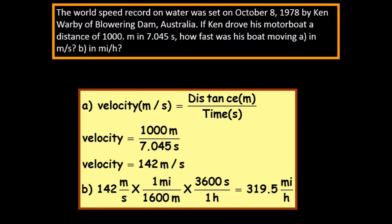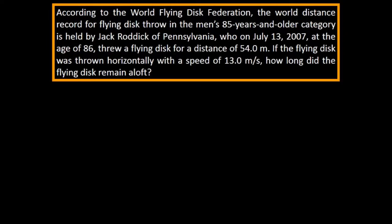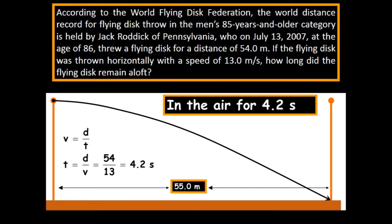The next problem will be something fairly basic. According to the World Flying Disc Federation, the world distance record for flying disc throw in the men's 85 years and older category is held by Jack Roddick of Pennsylvania, who on July 13, 2007, at the age of 86 threw a flying disc for a distance of 54 meters. If the flying disc was thrown horizontally with a speed of 13 meters per second, how long did the flying disc remain aloft? You see it's going to be moving for 4.2 seconds. 54 divided by 13.